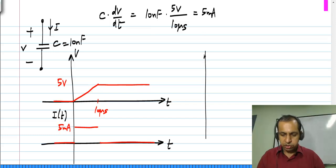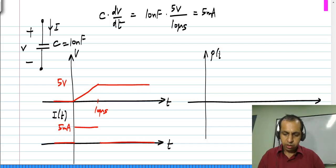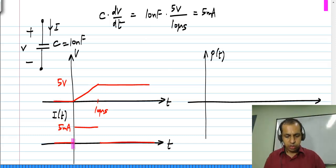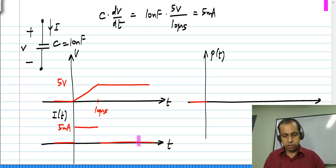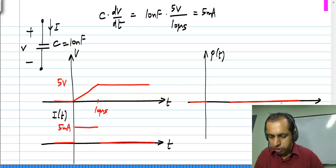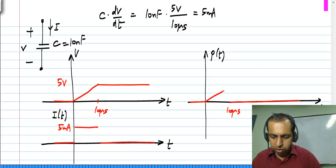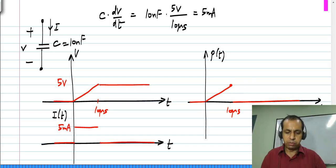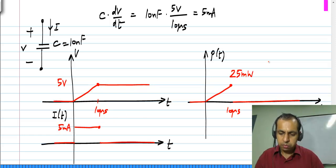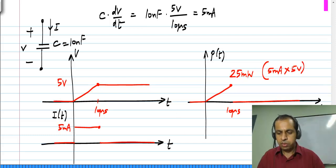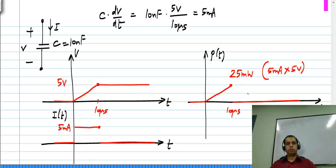We can calculate the power, which is the product of voltage and current. Before t equals 0 both voltage and current are 0, so power is 0. After t equals 10 microseconds the voltage is 5 volts and the current is 0, so power is again 0. Between these intervals the voltage varies linearly and the current is constant, giving a linearly increasing power. The value reached at t equals 10 microseconds is 5 volts times 5 milliamps, which is 25 milliwatts.